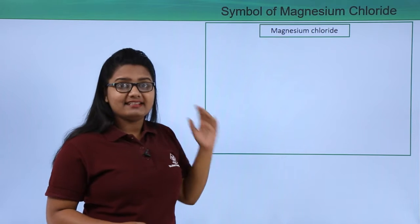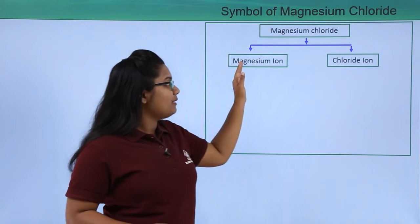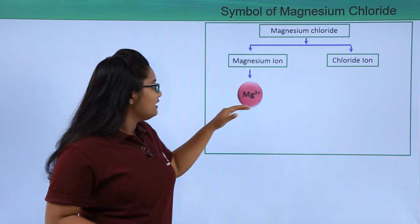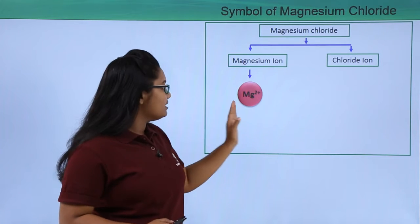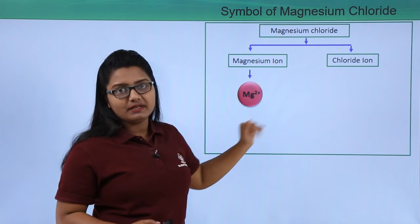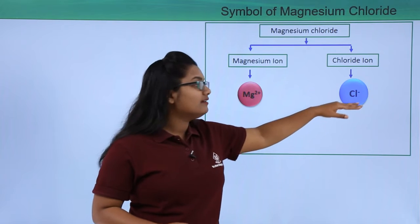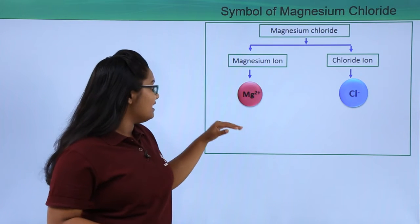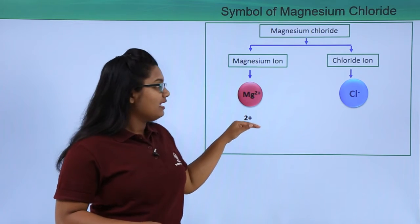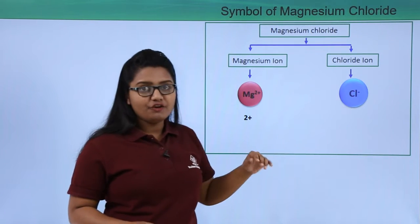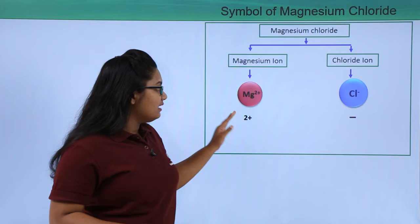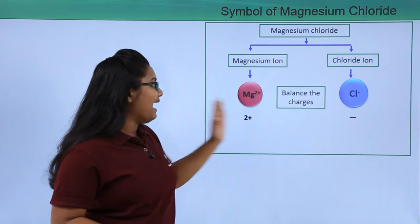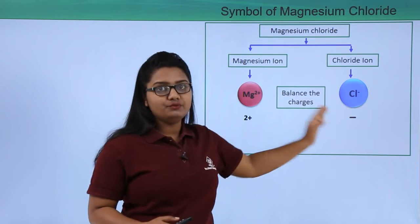Magnesium chloride has magnesium ions and chloride ions. The magnesium ion is represented as Mg²⁺, and the chloride ion as Cl⁻. From this we can see that the magnesium ion has a charge of 2+ and the chloride ion has a charge of 1−.